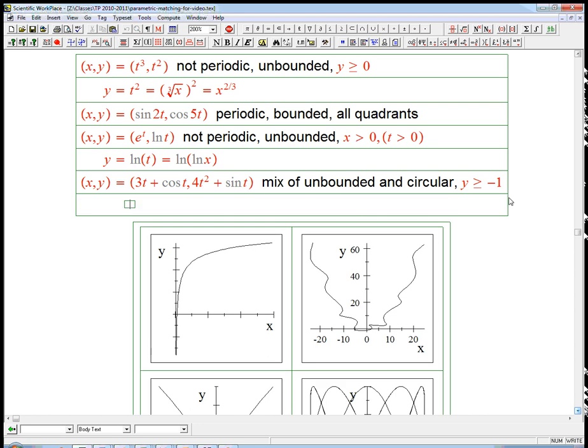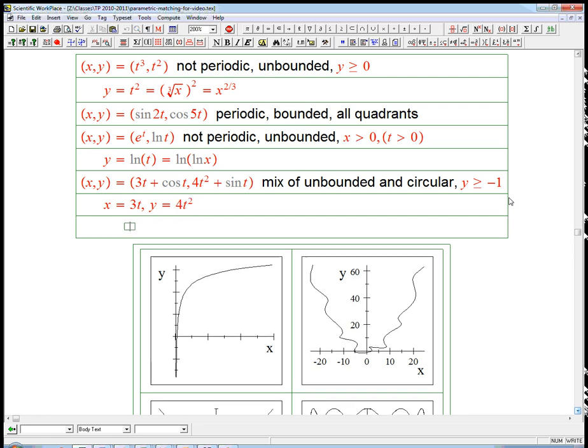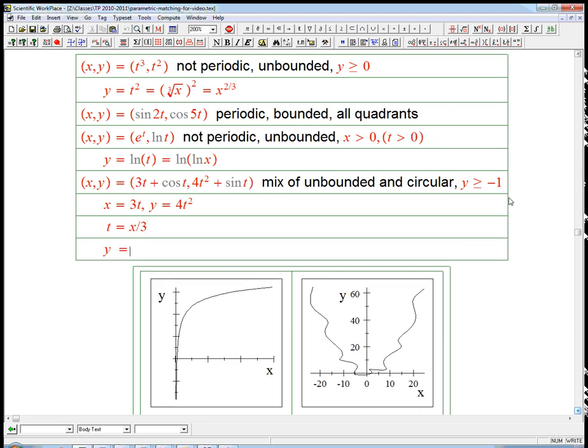We could eliminate the parameter on that. Then t would be x over 3, and so y would be 4 times the quantity x over 3 all squared. That is 4x squared over 9. That's a parabola. This kind of looks like a parabola drawn really badly.